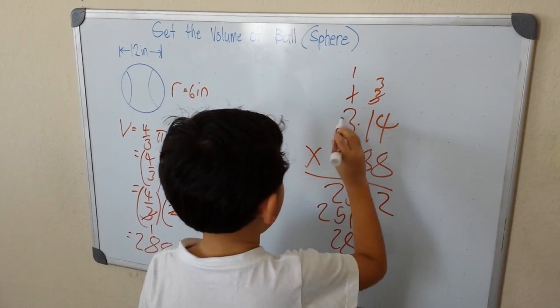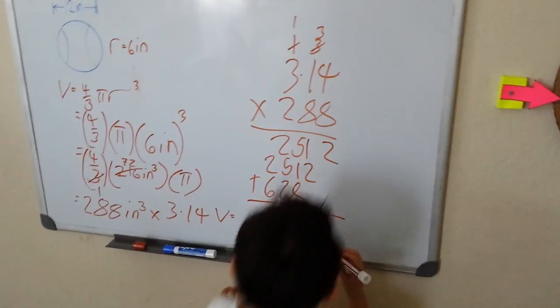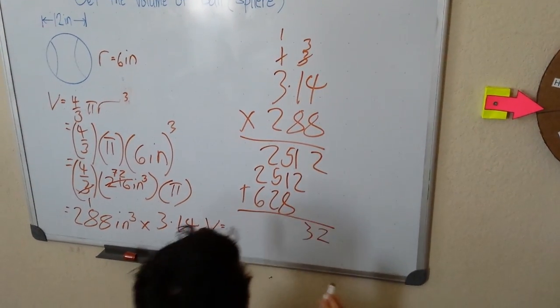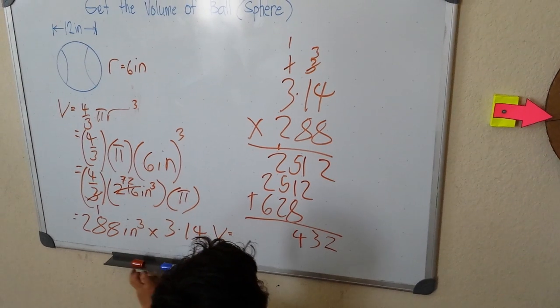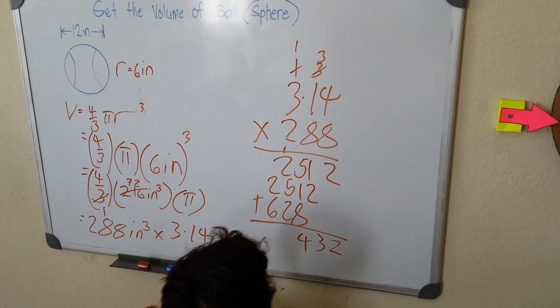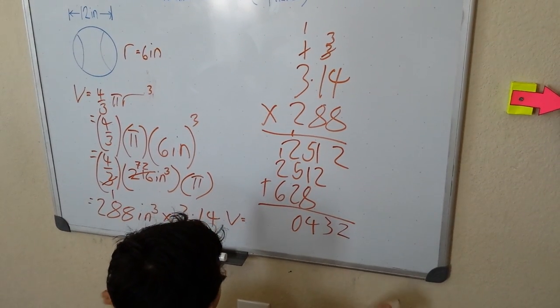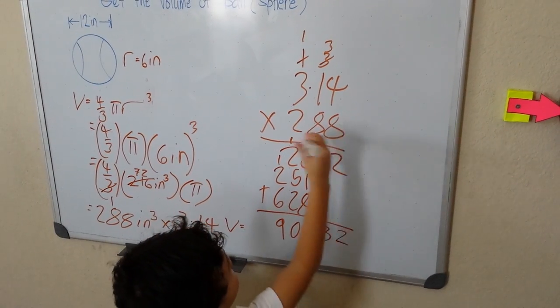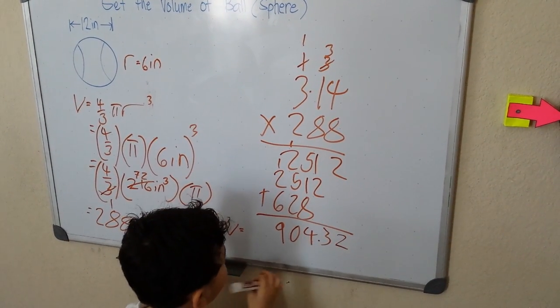So I'll add this up. 1 plus 2 is 3. 5 plus 1 is 6 plus 8 is 14, carry the 1. 1 plus 2 is 3 plus 5 is 8 plus 2 is 10, carry 1. 1 plus 2 is 3 plus 6 is 9. So we got 904.32. This is a big one, 904.32.